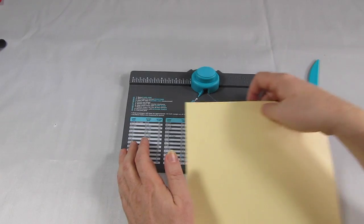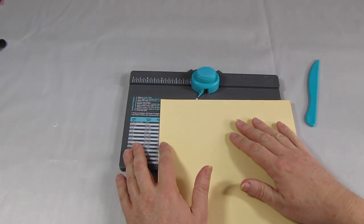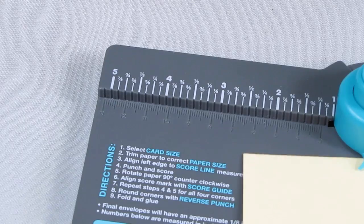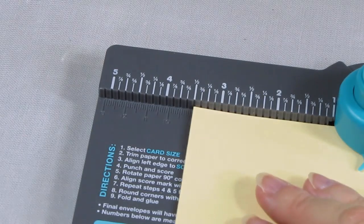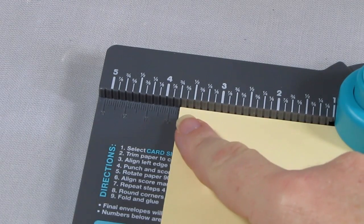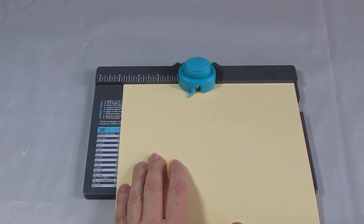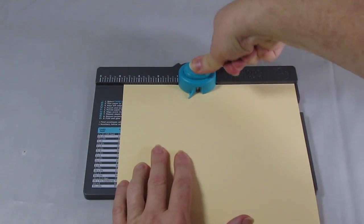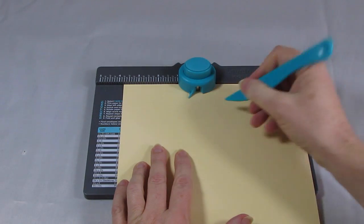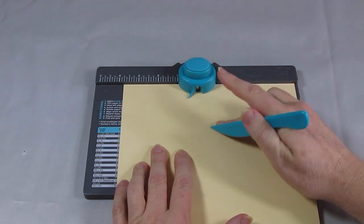Now let's take a piece of basil card and we'll put that into the punch board and align it there to nine and a half centimeters which is what the figure tells us on the table. And then we'll straight away punch that and take our scoring tool and score a line down here.